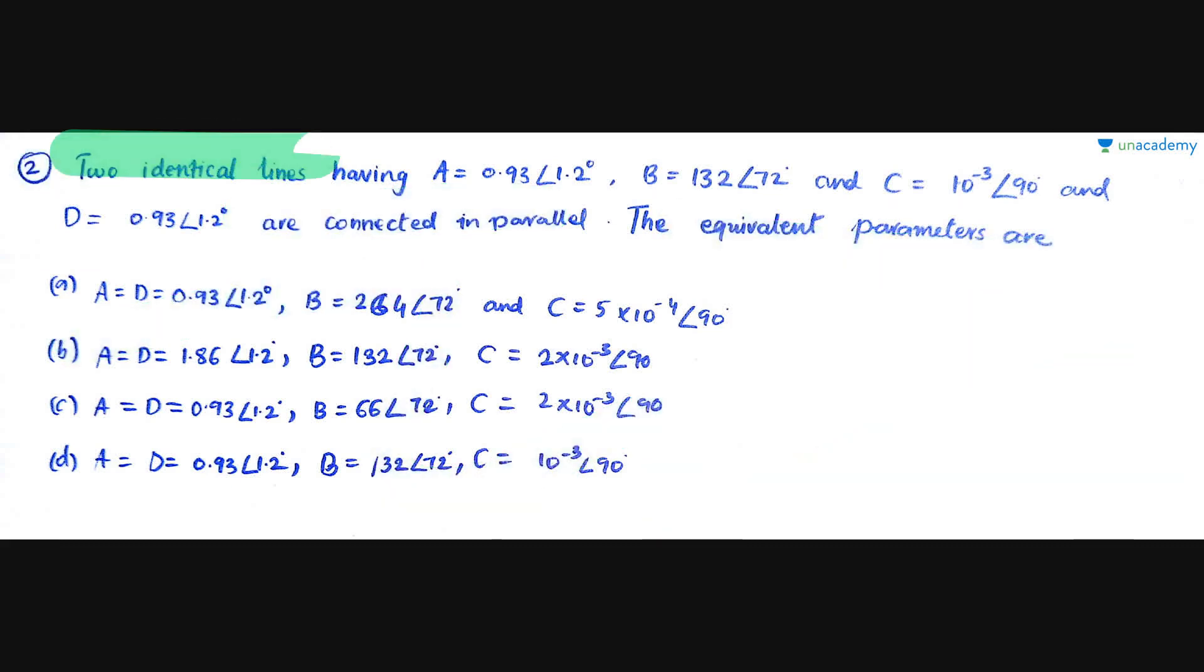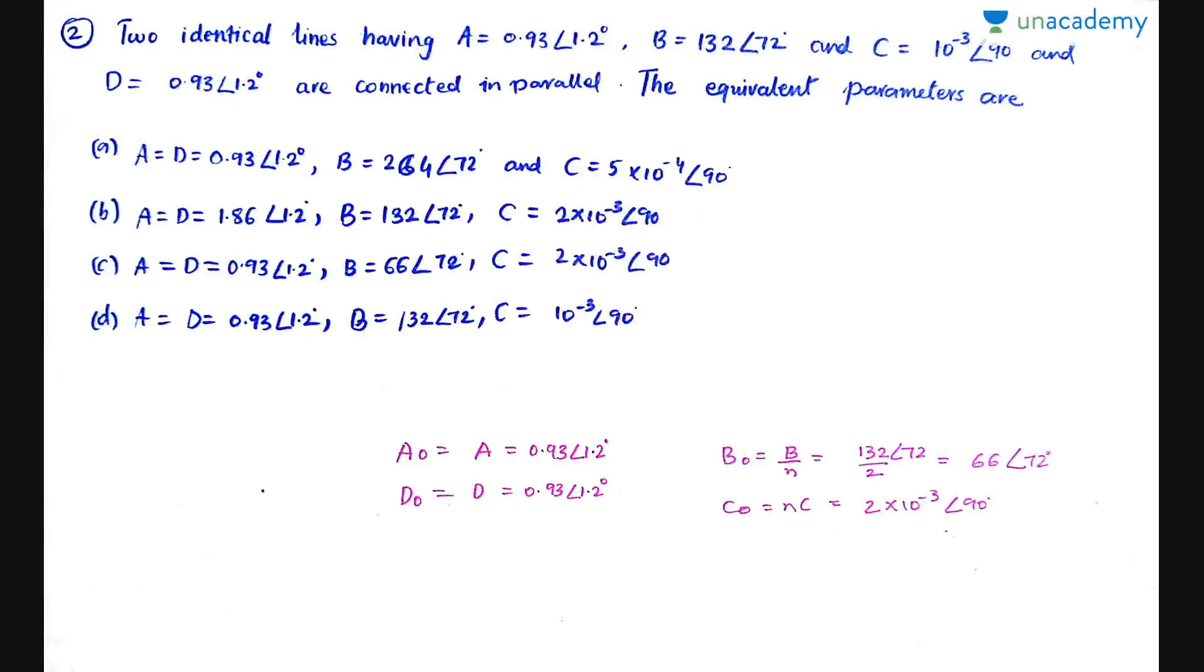It's telling that it is two identical lines. I hope you remember the overall parameters of N number of identical lines. For any number of identical lines connected in parallel, A0 or D0 will be equal to the original values. So A0 equals A, that is 0.93 at angle 1.2. D0 equals D, that is 0.93 at angle 1.2. And B0 will be B by N. What is N here? Two networks. So 132 by 2, which is 66 at angle 72.